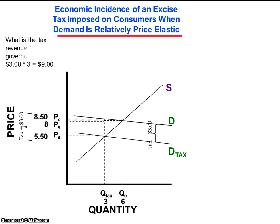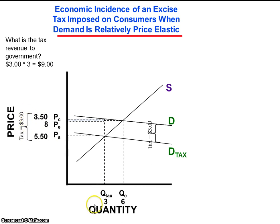But look at what happens to tax revenue to government. It is reduced significantly as a result of consumers curtailing their consumption. In this example, the tax revenue to government is only $9 — the amount of the tax per unit times the quantity, $3 times 3, equals $9.